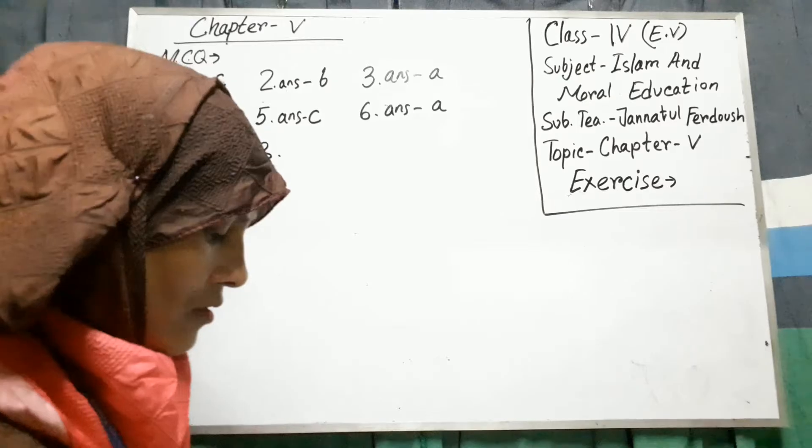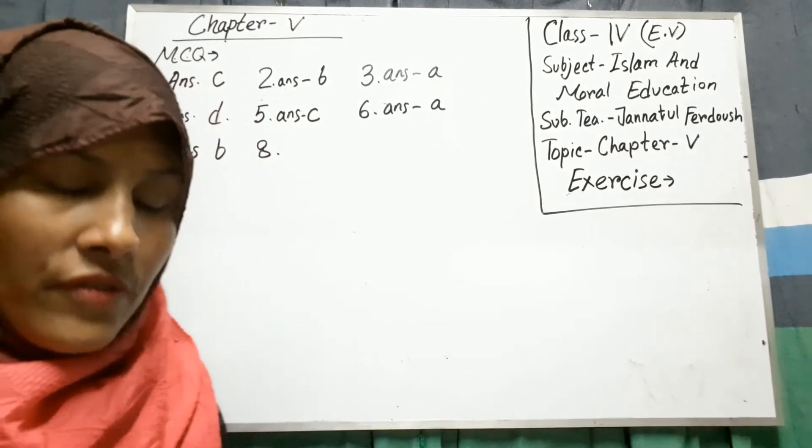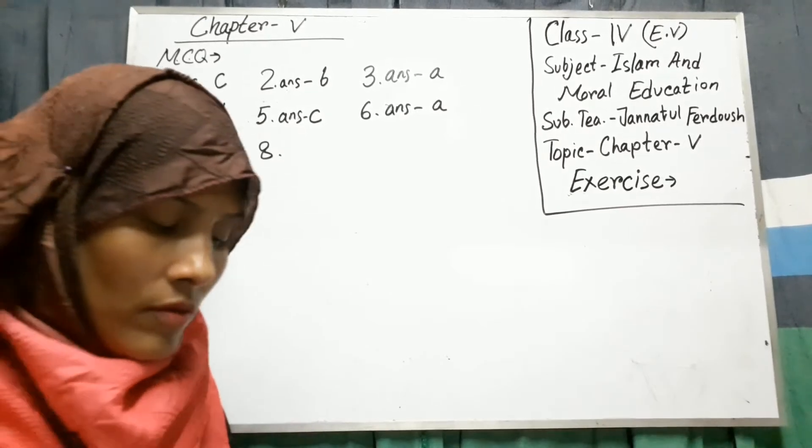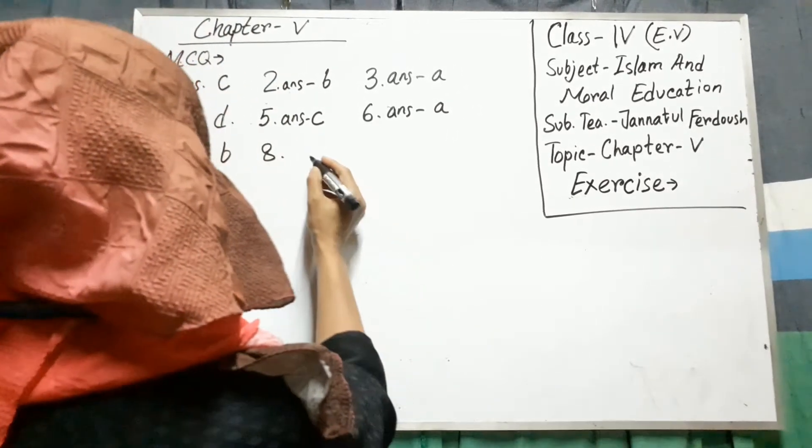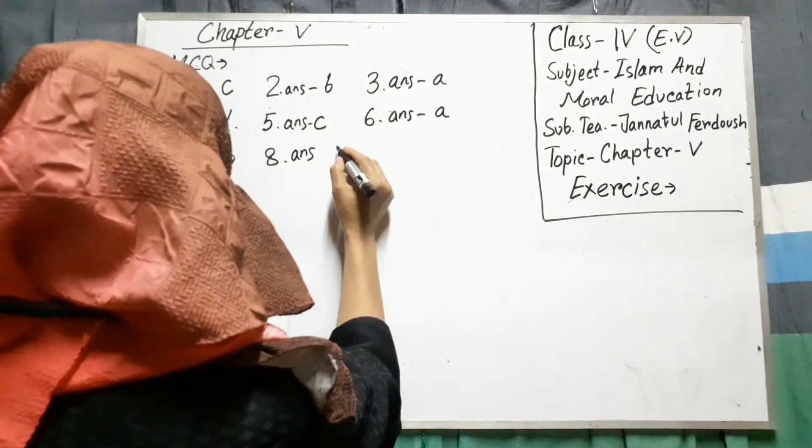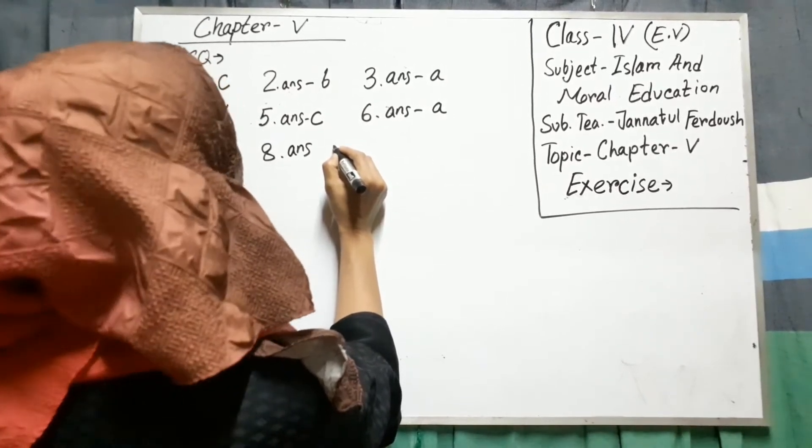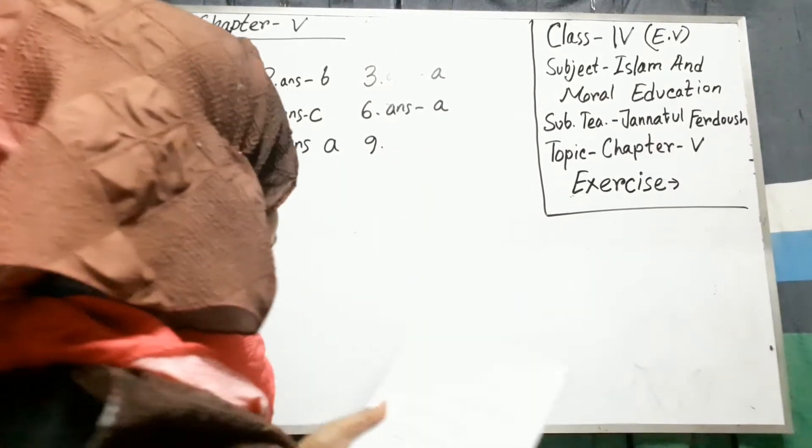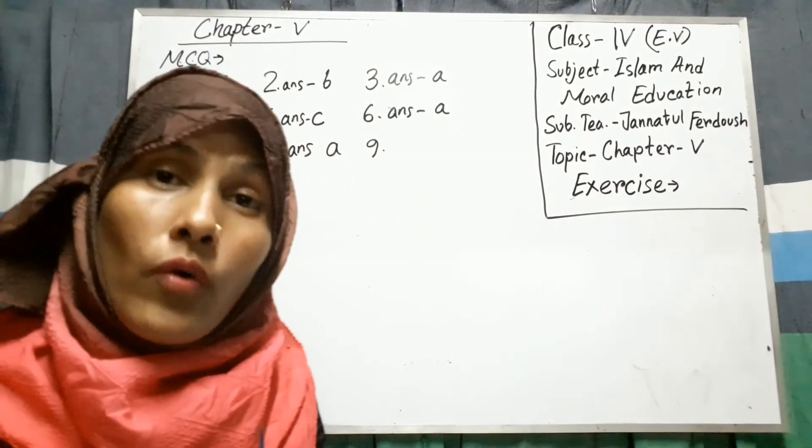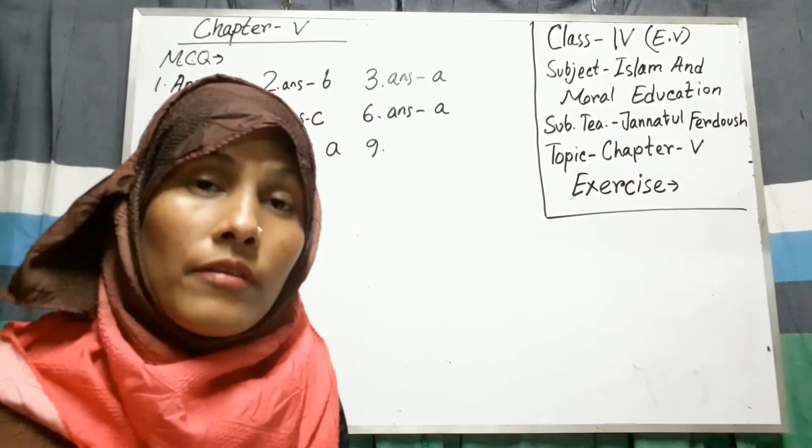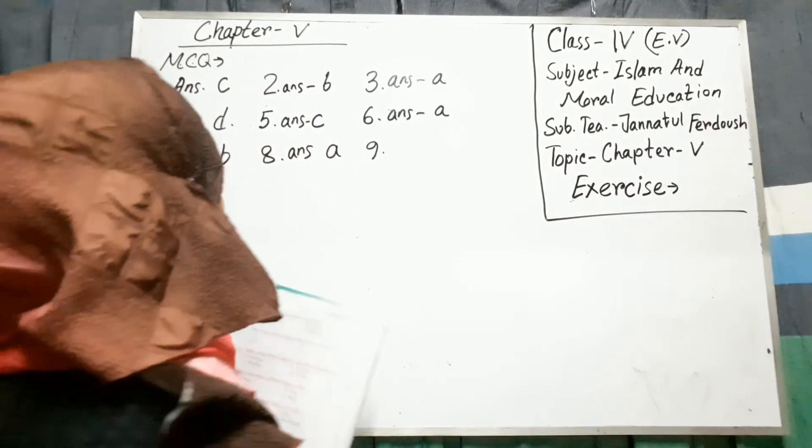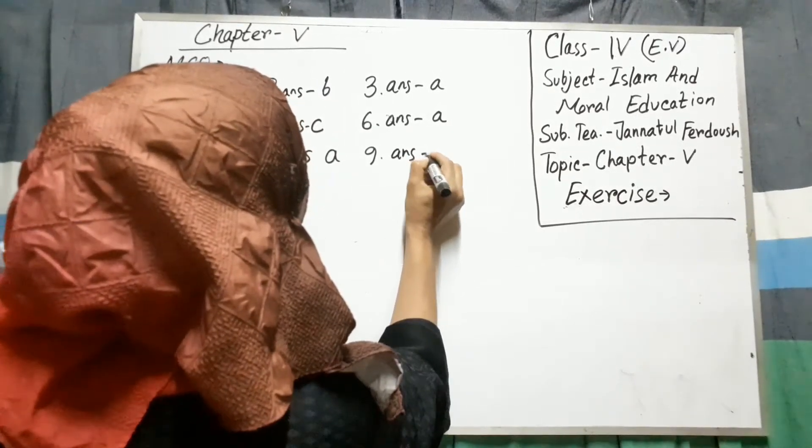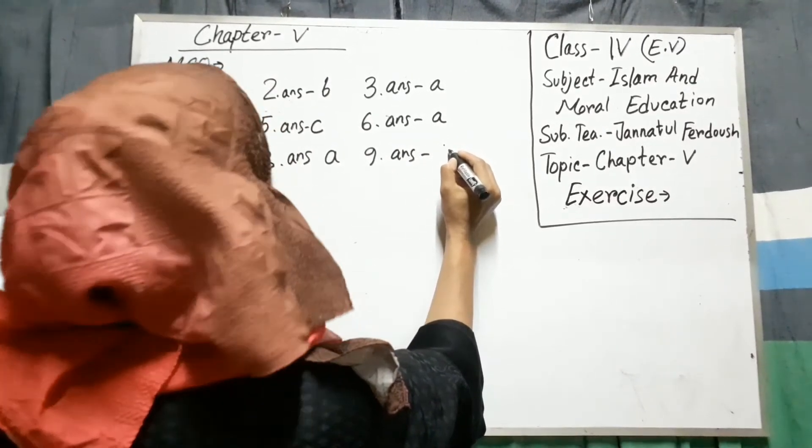8. In which family Hazrat Musa, Alayhi Aslam was born? Banu Israel. Write. 8. 9. What is the name of Pharaoh's wife? Pharaoh's wife's name was Asya. 9. C.